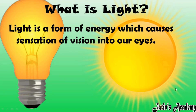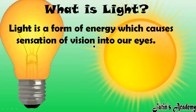What is light? As the chapter name suggests, light is energy. The definition of light: light is a form of energy which causes sensation of vision into our eyes. Whatsoever objects or things are present in our surrounding, we are able to see those objects — firstly, obviously, with the help of our eyes.